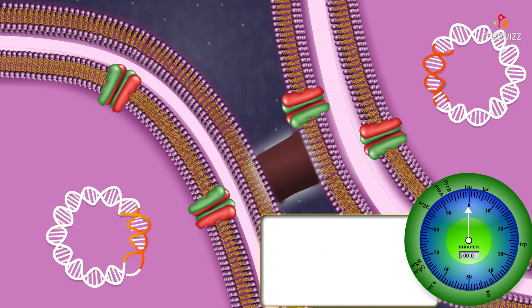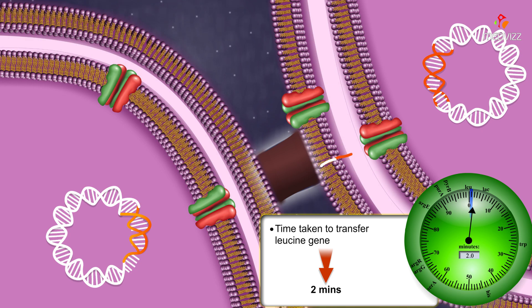Genes close to the fertility factor will transfer quickly. The gene for leucine transfers even when conjugation only lasts for 2 minutes. This tells us that the leucine gene is very close to the fertility factor.